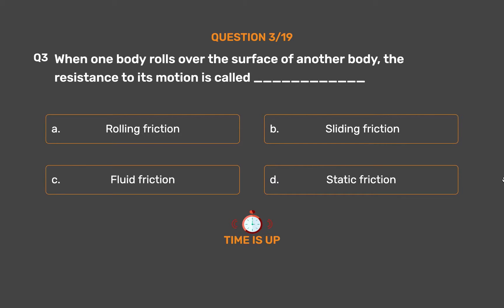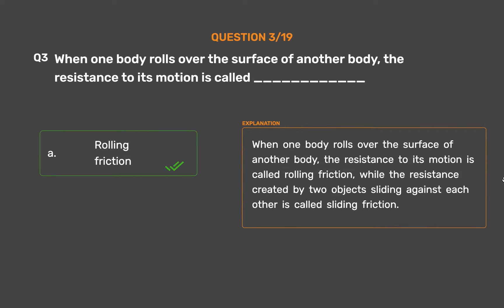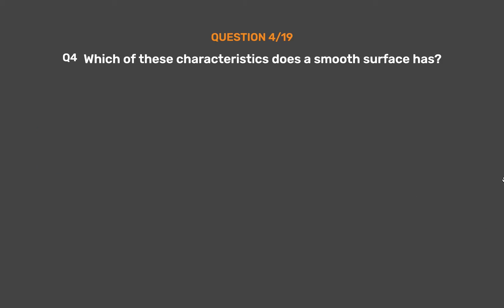The correct answer is Option A: Rolling friction. When one body rolls over the surface of another body, the resistance to its motion is called rolling friction, while the resistance created by two objects sliding against each other is called sliding friction.